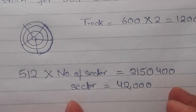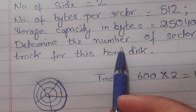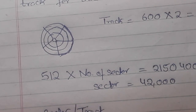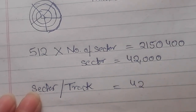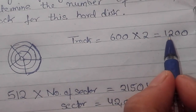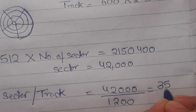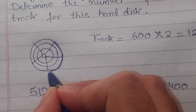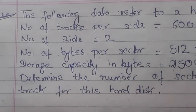What we need to calculate is the number of sectors per track. Number of sectors total is 4,200, and the total number of tracks is 1,200. So sectors per track equals 4200 divided by 1200, which equals 35. So there are 35 sectors in each track — in the first track there are 35 sectors, in the second track there are 35 sectors, and so on.